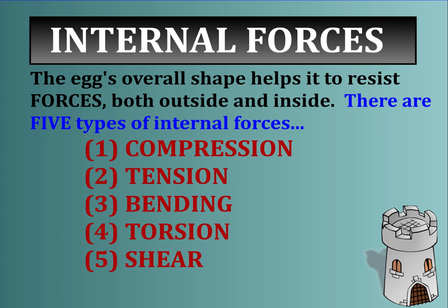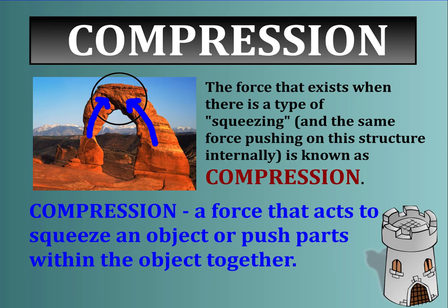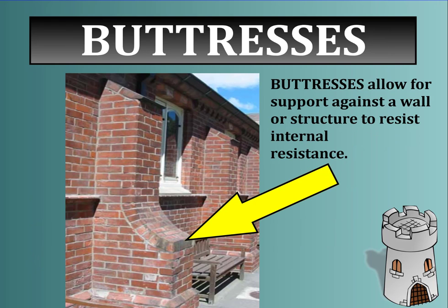Let's start with compression. Take a look at this arch — this beautiful, naturally made arch. Compression would occur at the top of the arch. It's the force that exists when there's a type of squeezing — the same force pushing on the structure internally. Compression is a force that acts to squeeze an object or push parts within an object together. We figured out quickly when building structures that compression can be used as our friend. Take a look at this little structure called a buttress — a supporter that allows a wall or structure to resist internal forces.